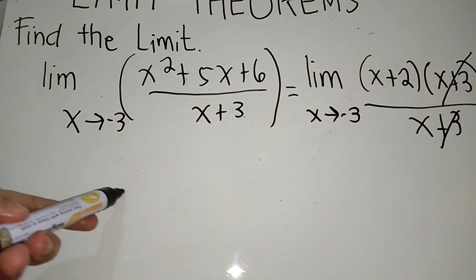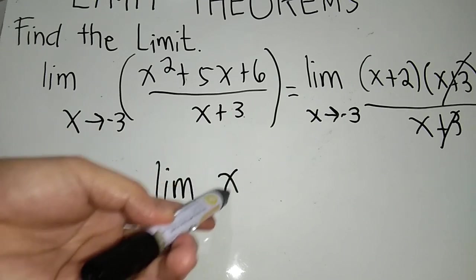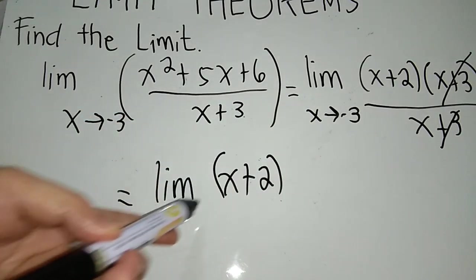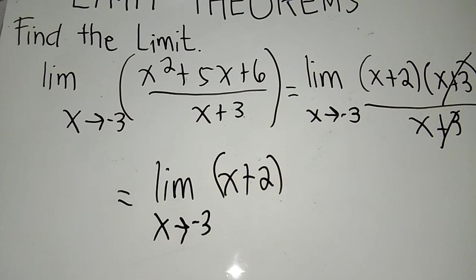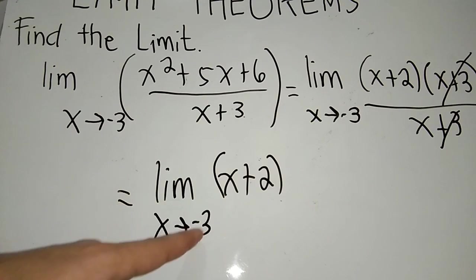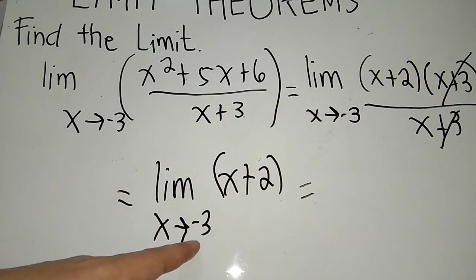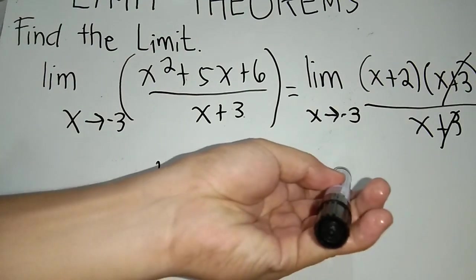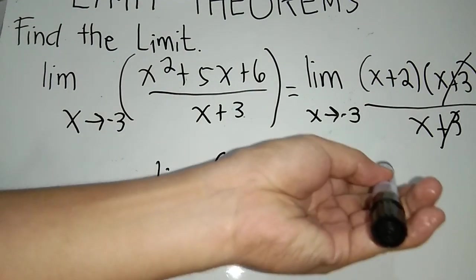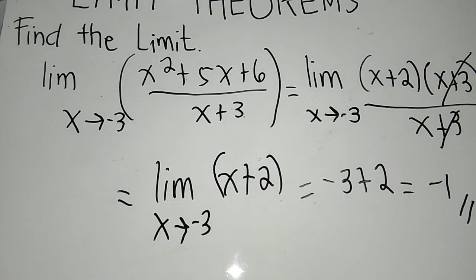After cancellation, this becomes the limit of x plus 2 as x approaches negative 3 — now a limit of a linear function. Substituting x with negative 3, and no longer writing the limit word, we get negative 3 plus 2, which equals negative 1. So negative 1 is our limit value.